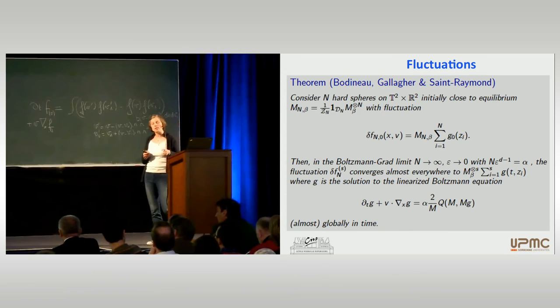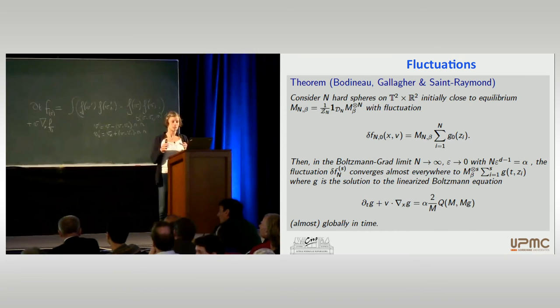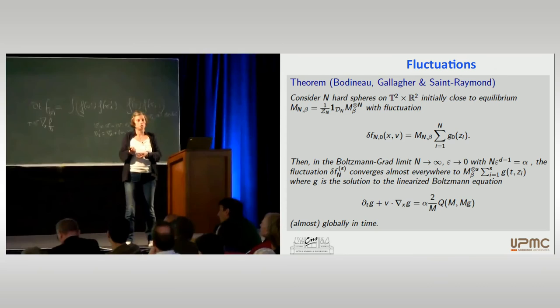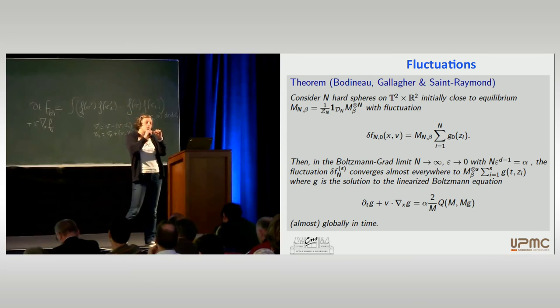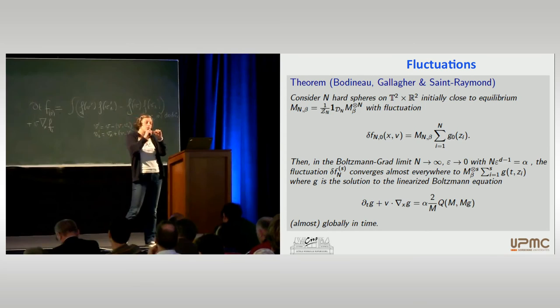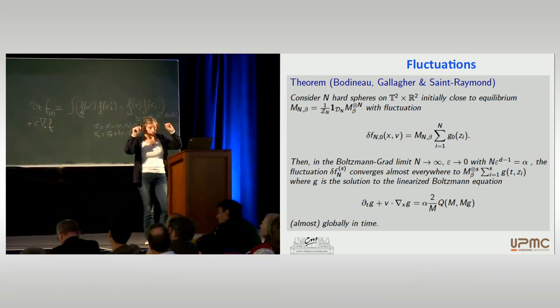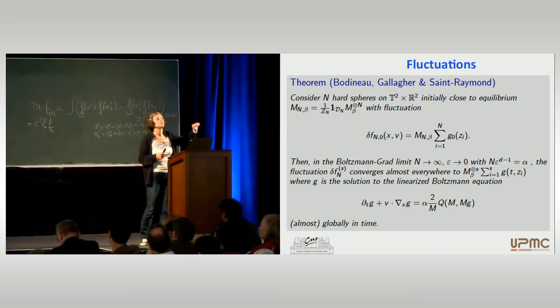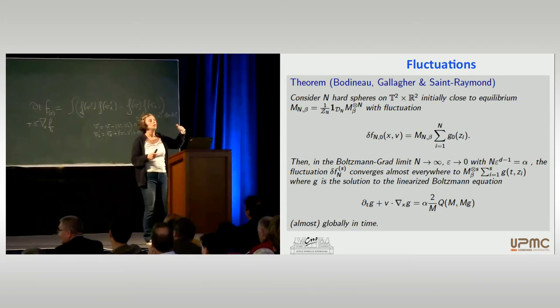There is one case where we can prove something a little bit better — a recent result that we proved with Thierry Bodineau and Isabelle Gallagher. You start from the same system, just in dimension two, with exactly the same dynamics. But you start from something which is very close to an equilibrium. You would like to say that you are able to push a little bit this time, because at least at equilibrium, you know that everything is stationary — so nothing should be valid only for a small time. So if you are very close to this equilibrium, the time for which you can say something should be bigger.